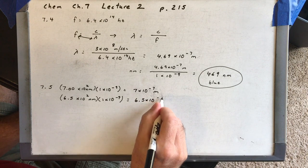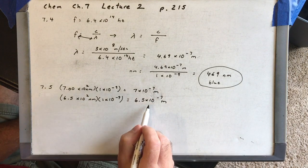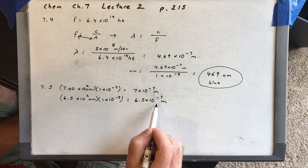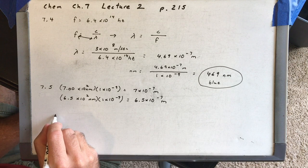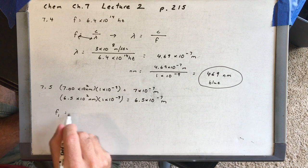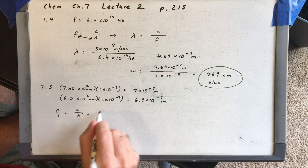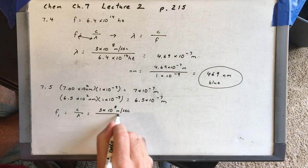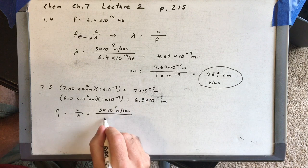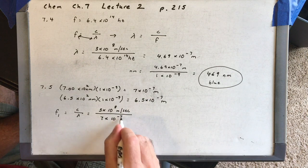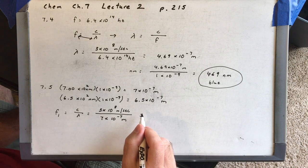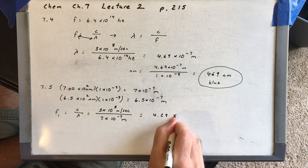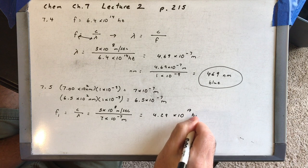Since the speed of light is in meters per second, we have to get our wavelength in meters. So for the frequency range, frequency 1 is the speed of light over the wavelength. That's 3 times 10 to the eighth divided by 7 times 10 to the minus 7 meters, and that is going to be 4.29 times 10 to the 14th hertz.